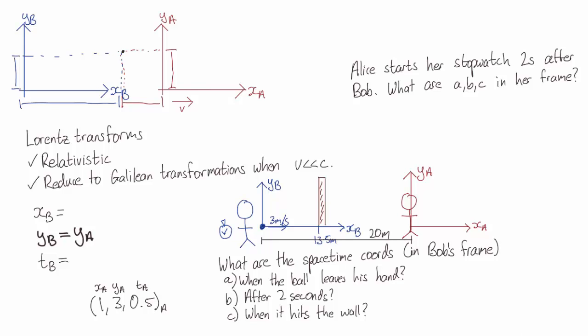We can see that the ball starts off at the origin of Bob's coordinate system and it leaves his hand right when he starts his stopwatch. So that's at Bob's time t equals 0. The coordinates of the ball leaving his hand are 0, 0, 0 in Bob's frame.